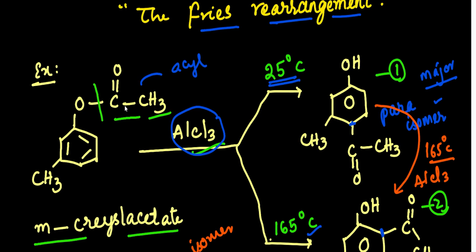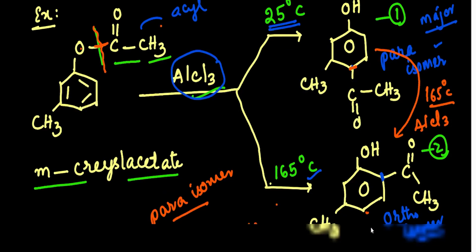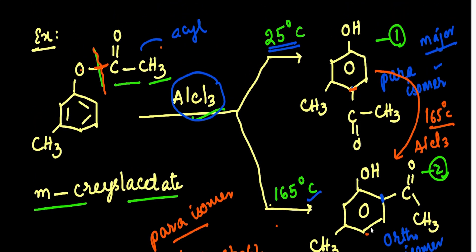This rearrangement is the Fries rearrangement. Generally, the Fries rearrangement is an intermolecular rearrangement. The initial step is the heterolysis of the acyl-oxygen bond, and the second step is the electrophilic attack by the acylium ion on the aromatic ring, which leads to the rearrangement product. This is one of the best examples to explain the Fries rearrangement.